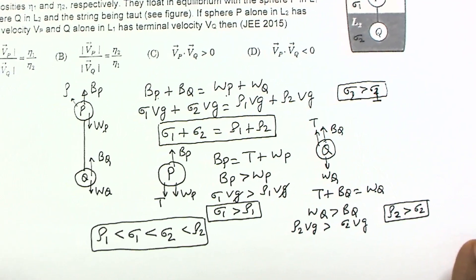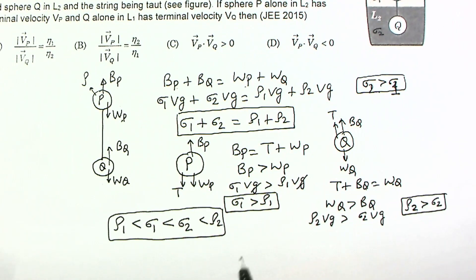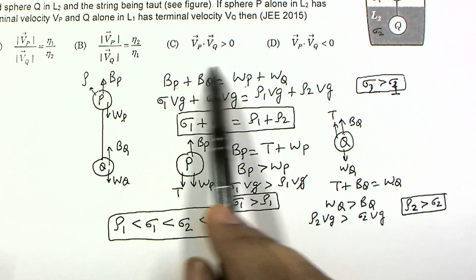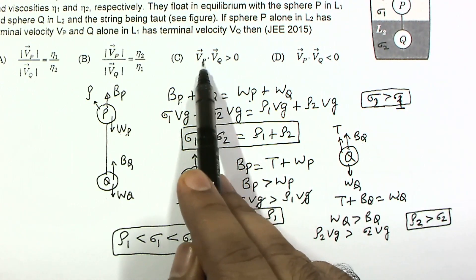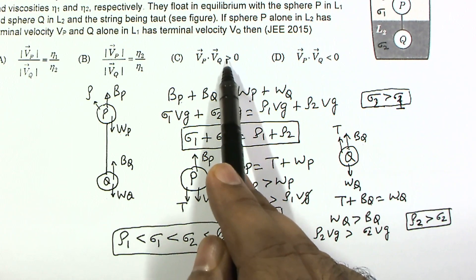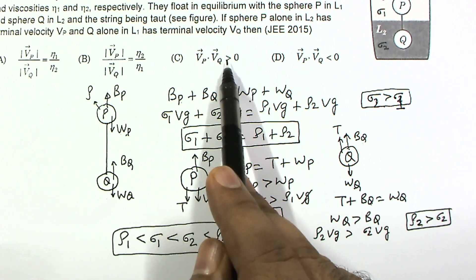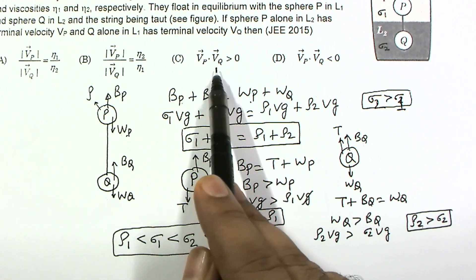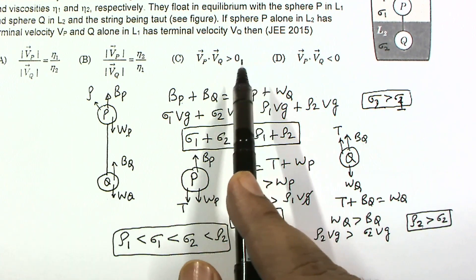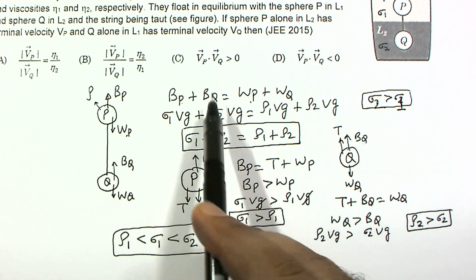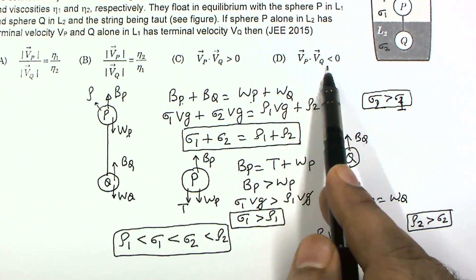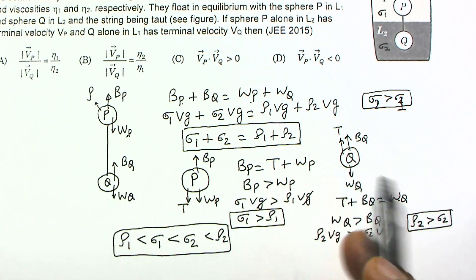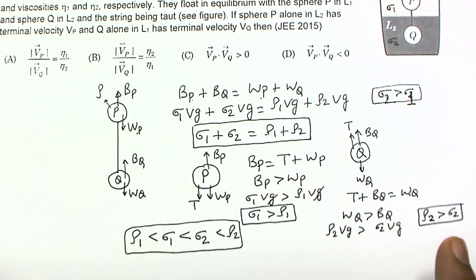Now for the terminal velocity part. The ratio of VP and VQ involves a dot product consideration. If the two velocities are in the same direction, the angle is small and the result is positive. If they are in opposite directions, the result will be less than zero. Terminal velocity direction depends on whether buoyancy exceeds weight or vice versa.